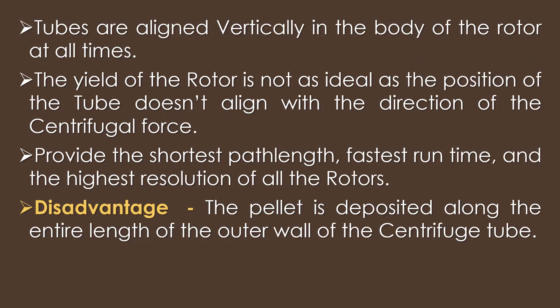In the vertical tube rotor, the tubes are aligned vertically in the body of the rotor at all times. The yield of the rotor is not as ideal, as the portion of the tube does not align with the direction of the centrifugal force. Vertical rotors provide the shortest path length, fastest run time, and the highest resolution of all the rotors. The pellet is deposited along the entire length of the outer wall of the centrifuge tube, which is a major disadvantage because the pellet tends to fall back into the solution at the end of centrifugation.